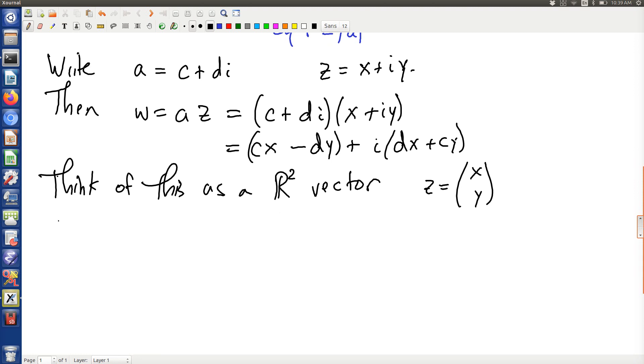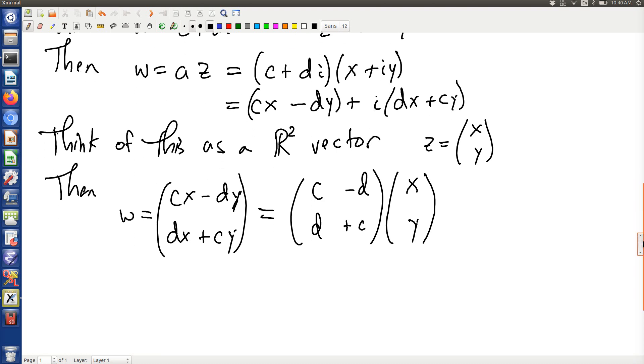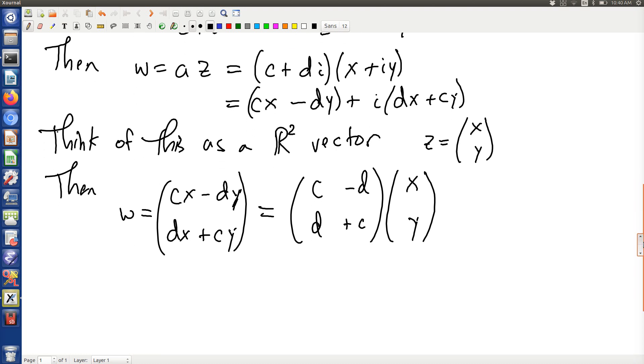Because then W is going to be CX minus DY in the first component and DX plus CY in the second component. That's a matrix multiplication. So that is what the linear transformation is. It really is just a matrix multiplication of a very particular kind.